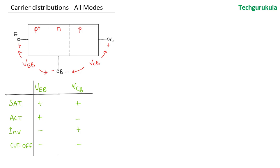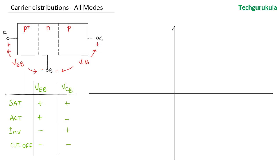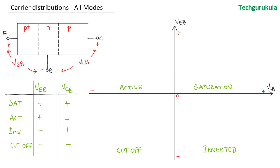Now let me take VEB and VCB as two axes and show a two-dimensional plot. We can take this axis as VEB and this one as VCB, where this side is positive, negative here, and zero here. Similarly, VEB is positive here, zero here, and negative here. Looking at this table, the first quadrant is saturation, the second quadrant is active, the third quadrant is cutoff, and the fourth quadrant is inverted or inverted active.